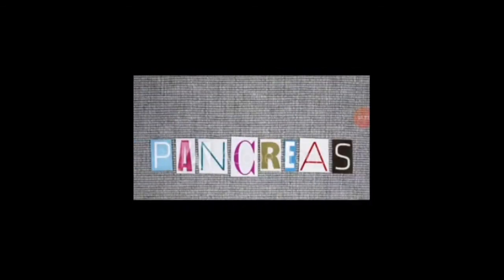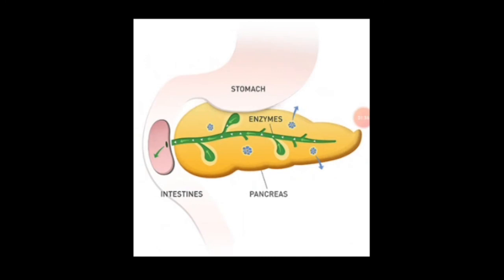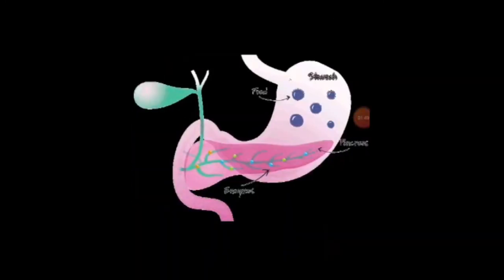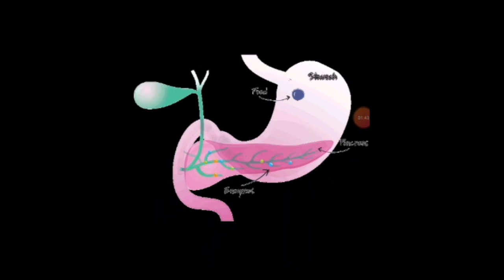Now we are going to study about the pancreas. The pancreas is a long, flattened organ located in the belly. It helps to break down food by producing digestive juices that break down fats. Thank you.